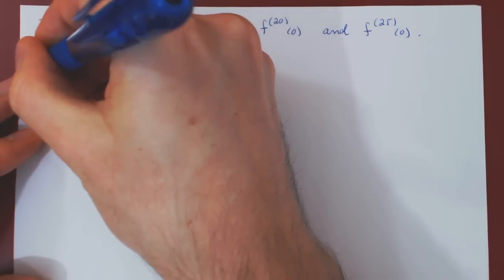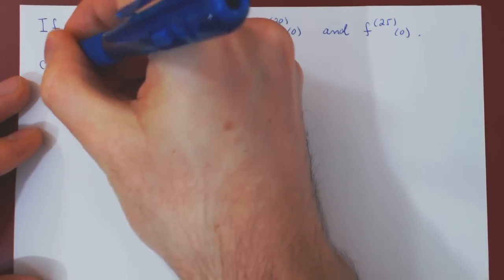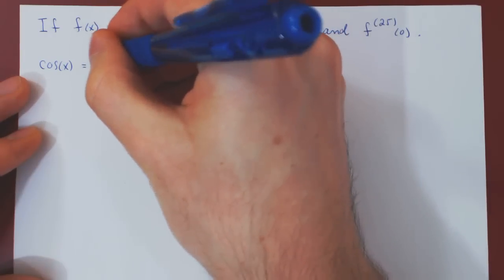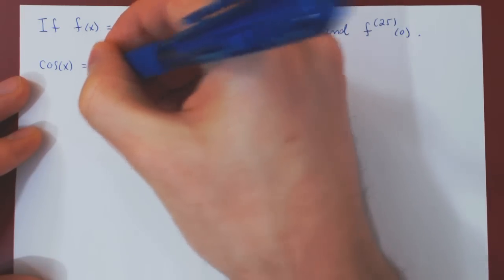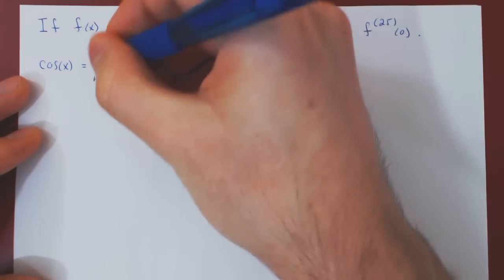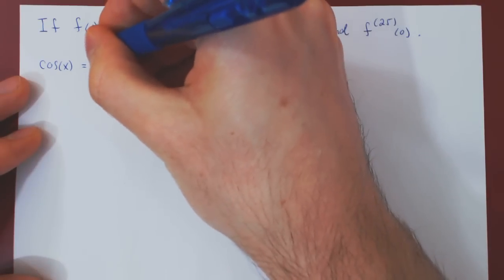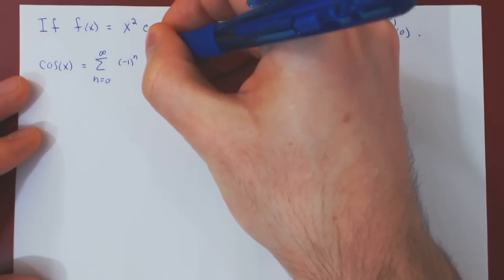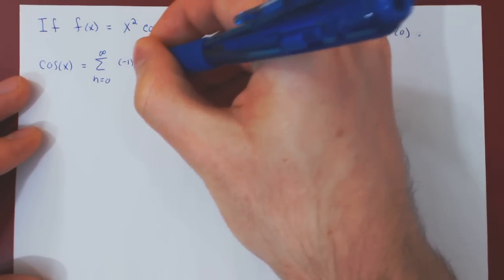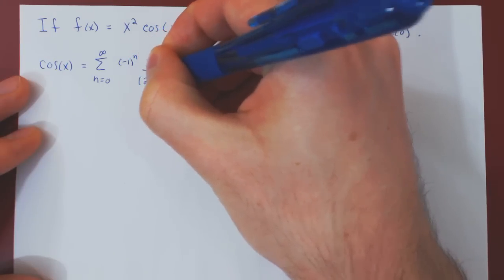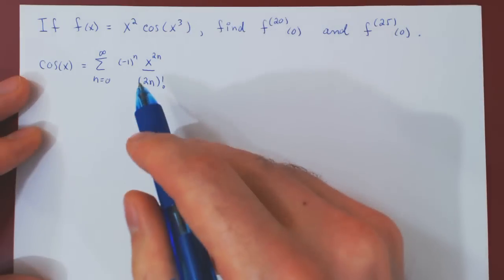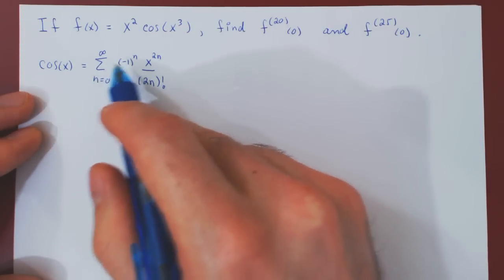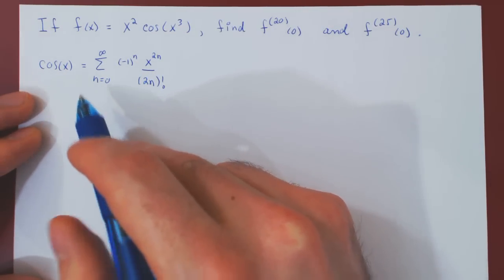If you recall, cos of x, as a Maclaurin series, can be expressed in the following fashion. This is the Maclaurin series of cos of x, and the equality is valid for all values of x.